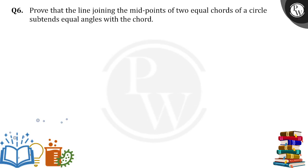Hello everyone. Prove that the line joining the midpoints of equal chords of a circle subtends equal angles with the chords. That is what we need to prove.